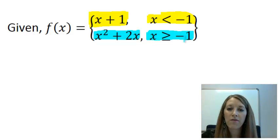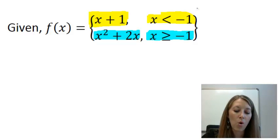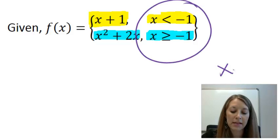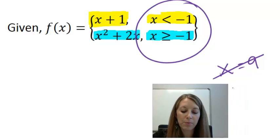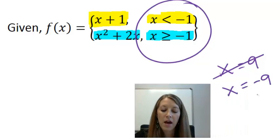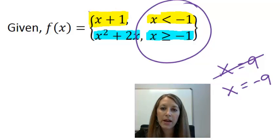If we want to evaluate some points on this function, the first thing we do is figure out where we are. If I wanted to plug in x equals 9, I figure out which interval it fits in — 9 is larger than negative 1, so I plug it into the blue or second piece. If I plug in x equals negative 9, negative 9 is less than negative 1, so I use the yellow or first piece. This piecewise function is defined at two different intervals, and that's how all piecewise functions work.